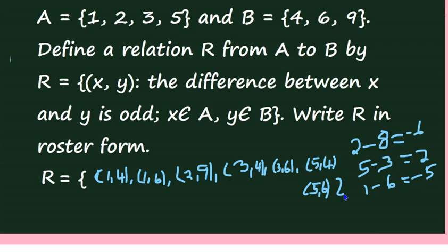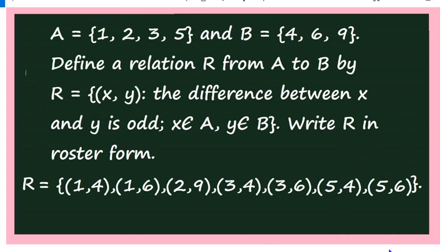This is the relation R in roster form: R = {(1,4), (1,6), (2,9), (3,4), (3,6), (5,4), (5,6)}. Thank you.